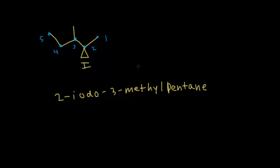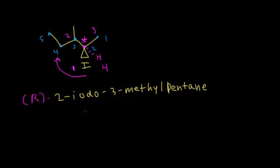To assign R or S, I think about increasing atomic number — highest atomic number gets highest priority. Iodine gets priority one. Hydrogen gets priority four. The alkyl group on the left gets second priority and the methyl group gets third. Going around clockwise from one to two to three, with hydrogen going away from me — clockwise is R. So this is (R)-2-iodo-3-methylpentane.